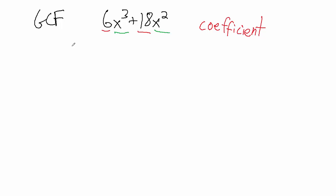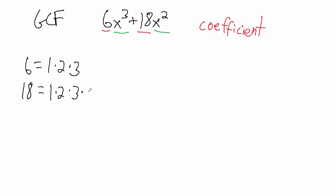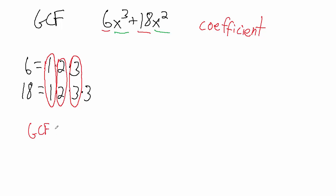We'll skip the factor tree and work directly. 6 is 1 times 2 times 3, and 18 is 1 times 2 times 3 times 3. What factors do these two numbers have in common? They have a factor of 1, a factor of 2, and a factor of 3 in common. That's it — 6 has no more factors. So the greatest common factor for the coefficients is 1 times 2 times 3, which is 6.